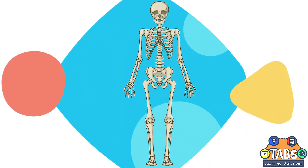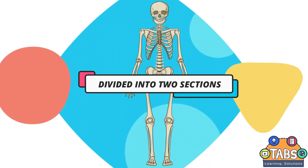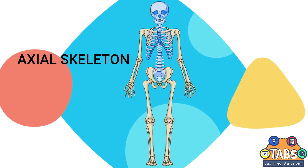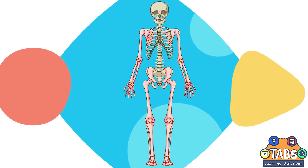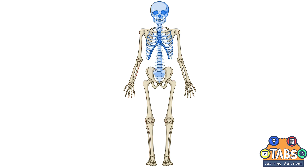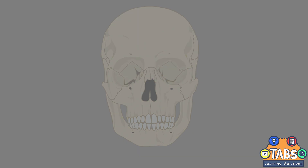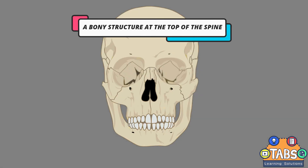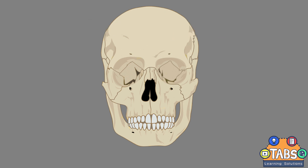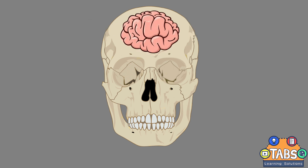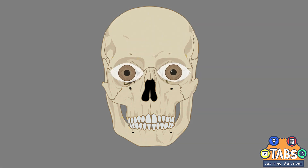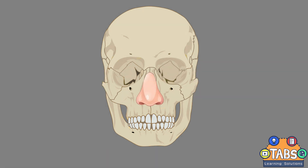The human skeleton is divided into two sections: the axial and appendicular skeleton. The axial skeleton consists of the skull, the spine, and the rib cage. The skull is a bony structure at the top of the spine that protects the brain and other principal organs such as the eyes, ears, and nose.